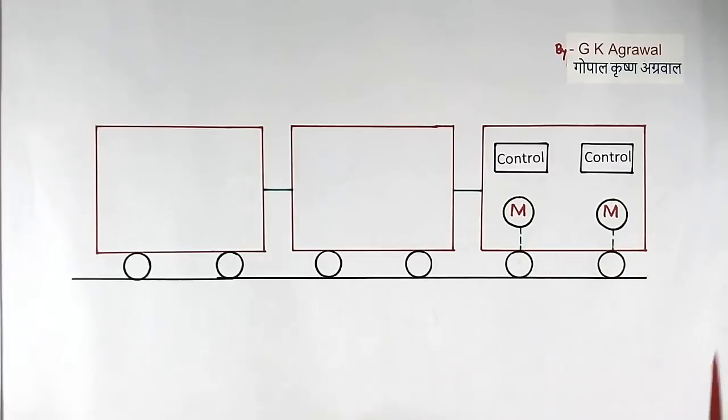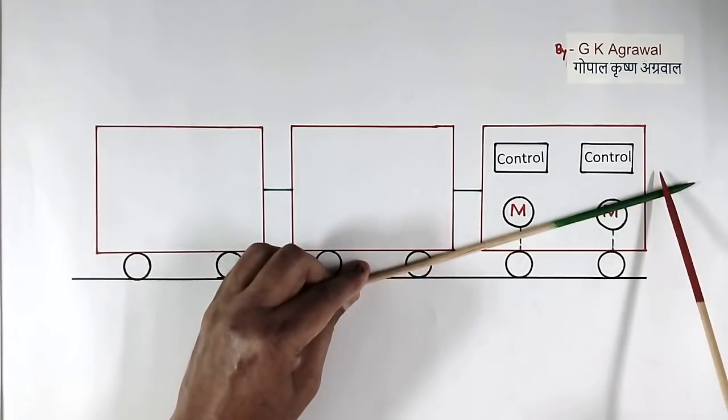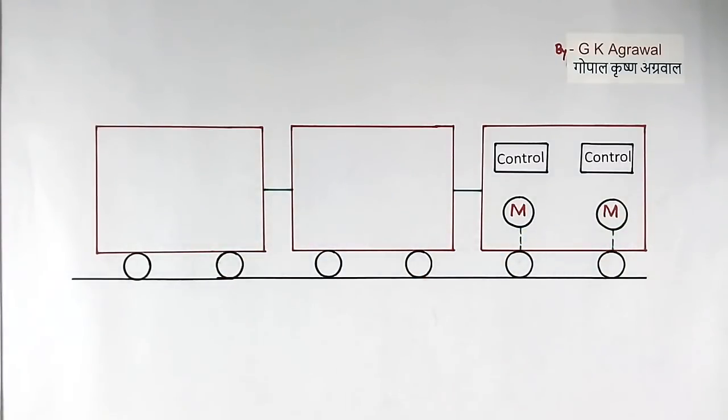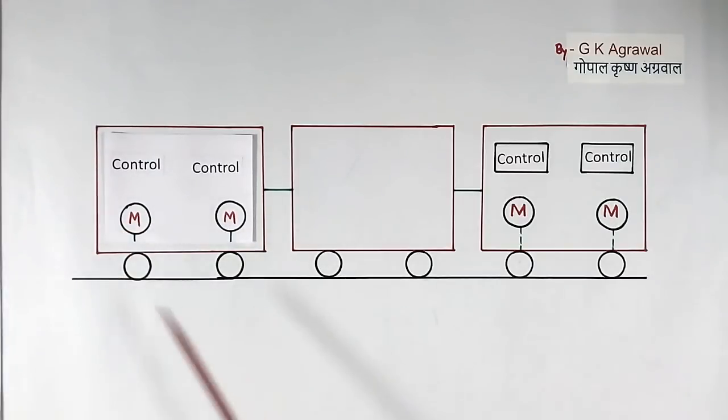This problem becomes more when train is moving on a slope or train is just starting. Now some big trains will have more than one engine. Similarly metro trains will have more than one engine. Engine is distributed in many bogies. So suppose this is one engine and this is another engine. In such cases, torque and power requirement will be different for this engine and this engine.